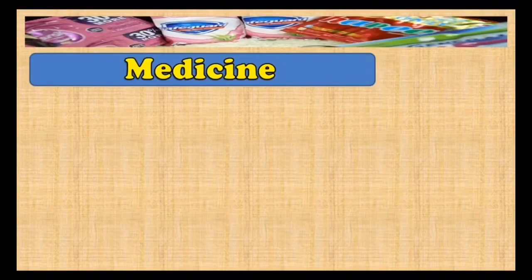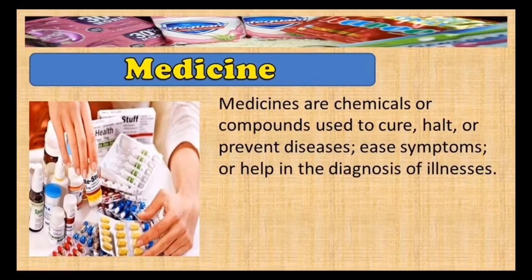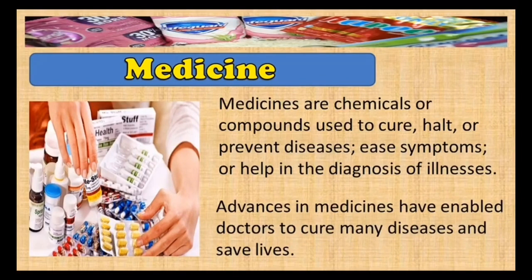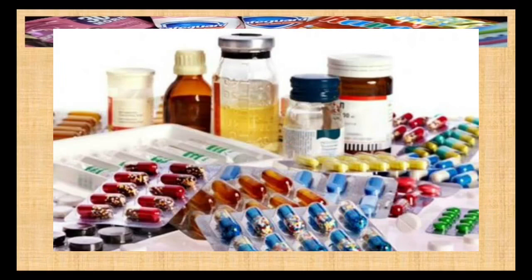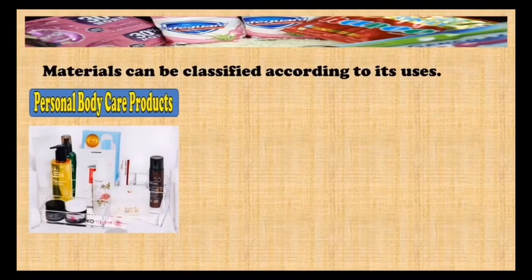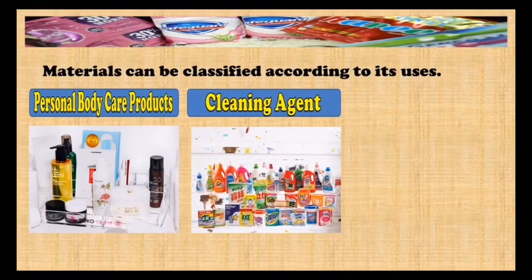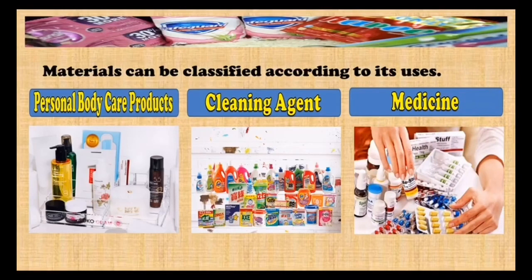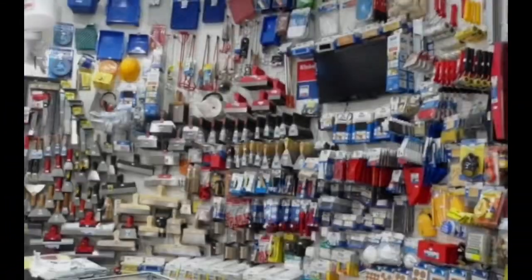The last classification of material that we will study today are medicines. Medicines are chemicals or compounds used to cure, halt, or prevent diseases, ease symptoms, or help in the diagnosis of illnesses. Advances in medicines have enabled doctors to cure many diseases and save lives. Materials can be classified according to its uses: personal body care products, a cleaning agent, or medicine. There are a lot more classifications of materials — we will study them in the next video.